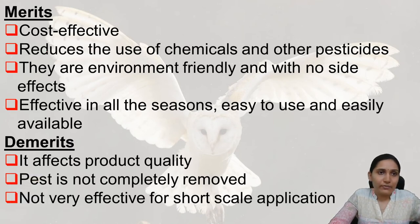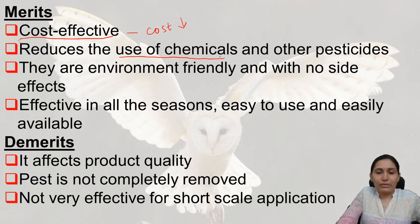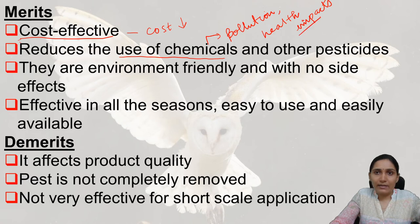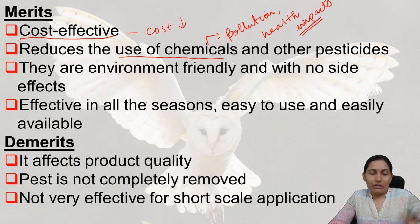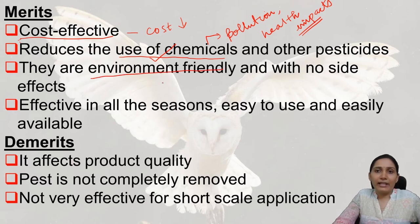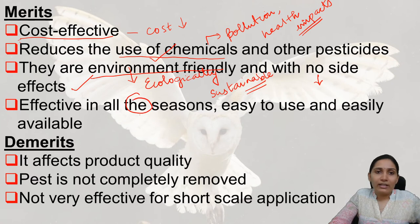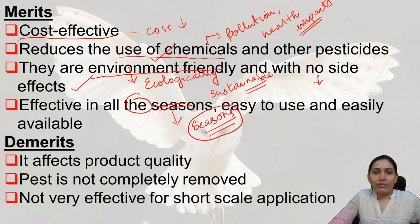The merits of biological control are: first, it is very cost-effective with very low costs involved. Second, it reduces the use of chemicals, which cause pollution and various health hazards. These biological methods are environment-friendly with no side effects — they are ecologically sustainable. They are also effective in all seasons, whereas some pesticides may not adapt to certain seasons.